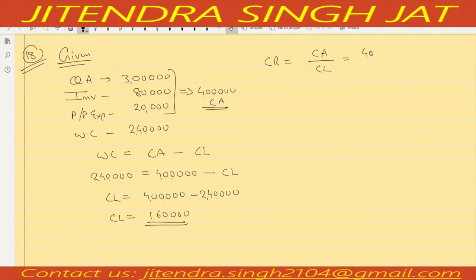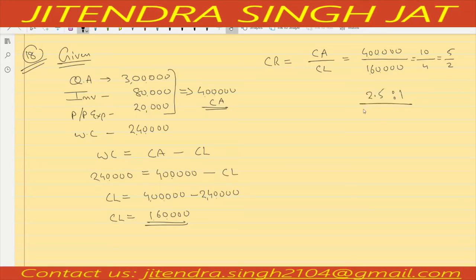Current asset is 4 lakh and current liability is 1 lakh 60,000. Dividing 4 lakh by 1 lakh 60,000 — that is 40 by 16, which is 10 by 4, meaning 5 by 2, or 2.5. So current ratio is 2.5 is to 1. I hope it is clear to everyone.